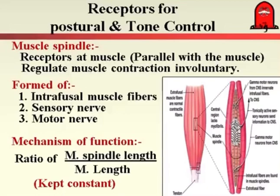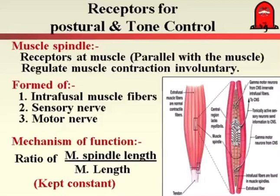If, for example, the muscle spindle length is one and the length of the skeletal muscle is one hundred, this ratio of 1:100 should be kept constant. If there is sudden stretching or sudden contraction and shortening of the skeletal muscle, this ratio will be changed. Accordingly, the muscle spindle will send impulses to the higher center to produce contraction or relaxation in the skeletal muscle to restore the ratio to its normal value.